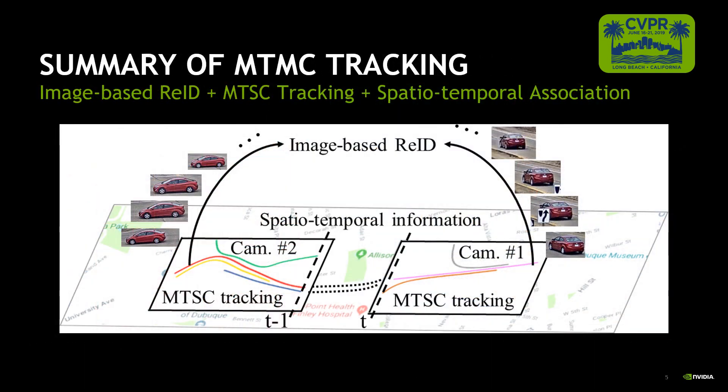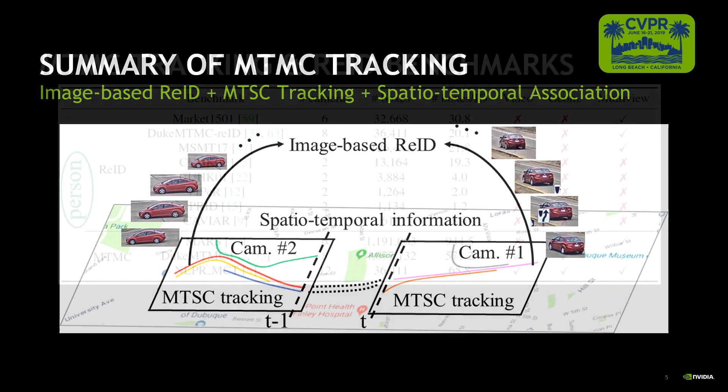In summary, image-based re-ID is one of the three main components of MTMC tracking. We also need to conduct multi-target single-camera tracking to compute trajectories within each camera. Besides, spatial-temporal information between cameras can be utilized for the association of trajectories.